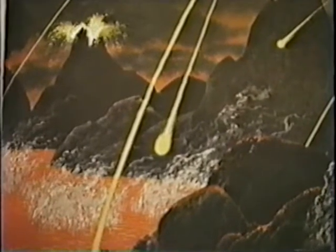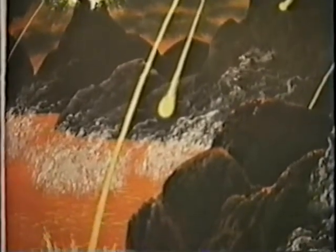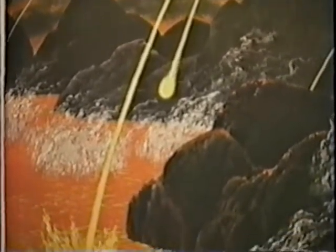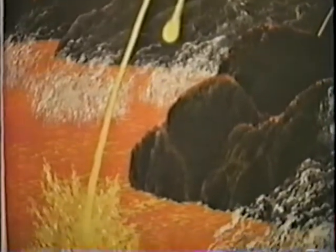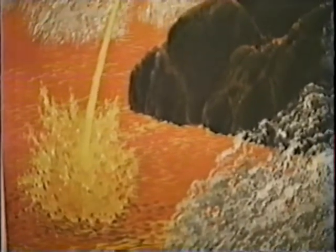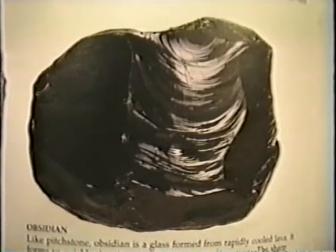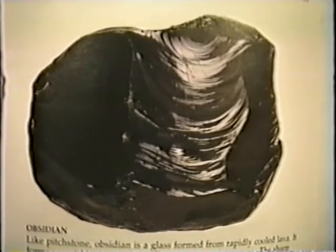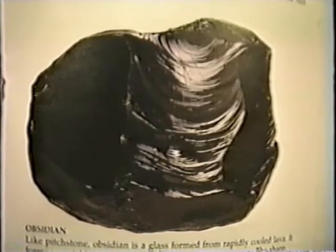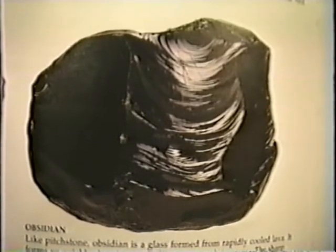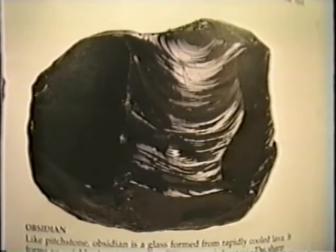Sometimes magma does not cool in the Earth. It may come out of the ground — it may come out quickly and burst out of a volcano. Magma which reaches the surface of the Earth and moves over the ground is called lava. Rocks which cool quickly have very small crystals. Some rocks are shiny; they are like glass, like black obsidian.